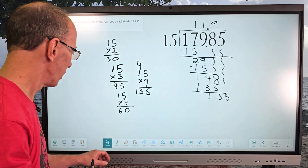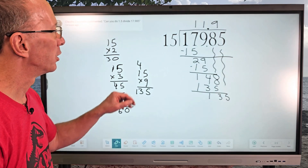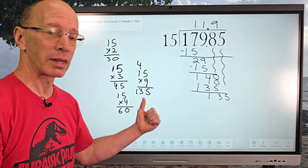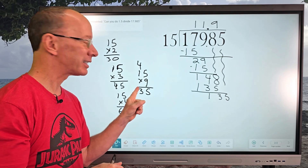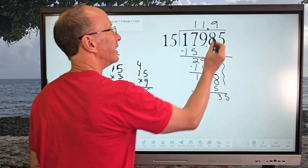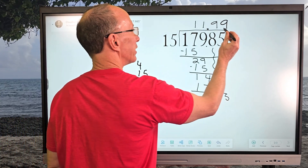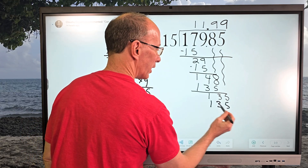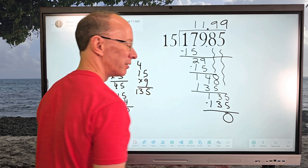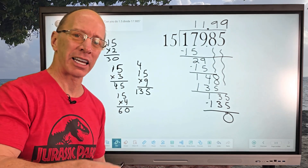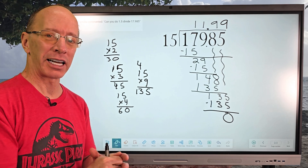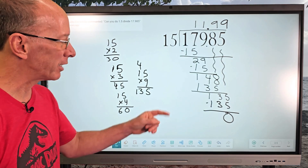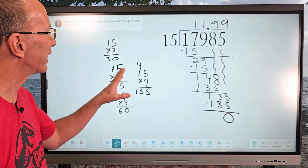Our next step: how many times can I put 15 into 135? Do you see it? It's 9 — that's awesome! So I put 9 right here, 9 times 15 is 135, I subtract, and I have 0. So our final answer is 11.99. If you got the right answer, hit that like button — let's try to get the likes all the way to 100 or maybe even a thousand!